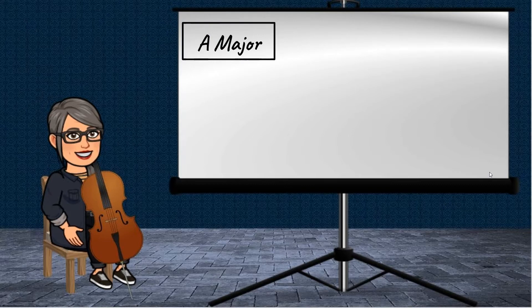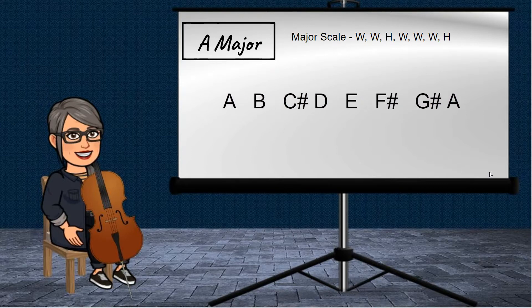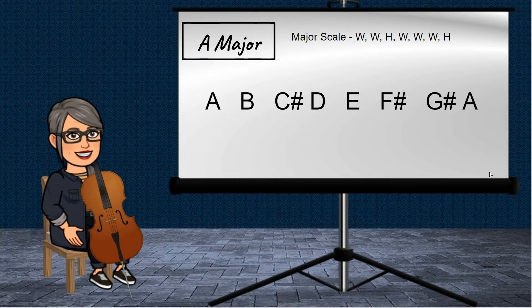When we talk about major, we're talking about how we put together the notes in the scale. We use a particular formula, and when we use this formula of whole steps and half steps, we get the notes of the A major scale. They are A, B, C sharp to D, which is your first half step, E, F sharp, G sharp to A, which is your last half step. So these are very crucial in creating that A major sound.